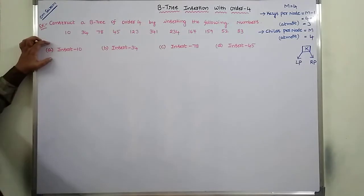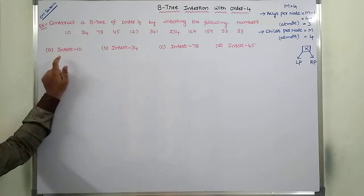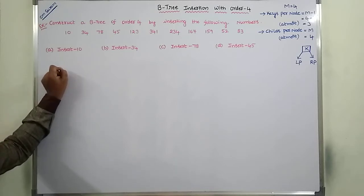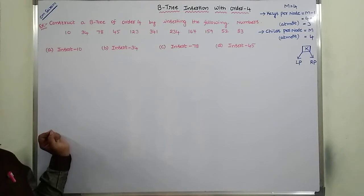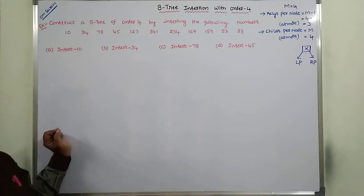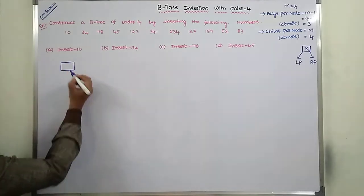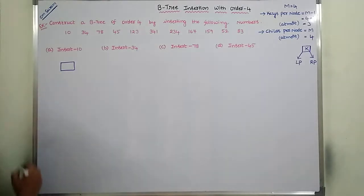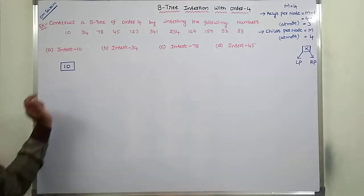First we have to insert 10. Before inserting, the B-tree is empty. In B-tree insertion, the insertion of an element is always done at the leaf node. So first we create a node and insert the value into that node. This B-tree now contains a single node with key element 10.